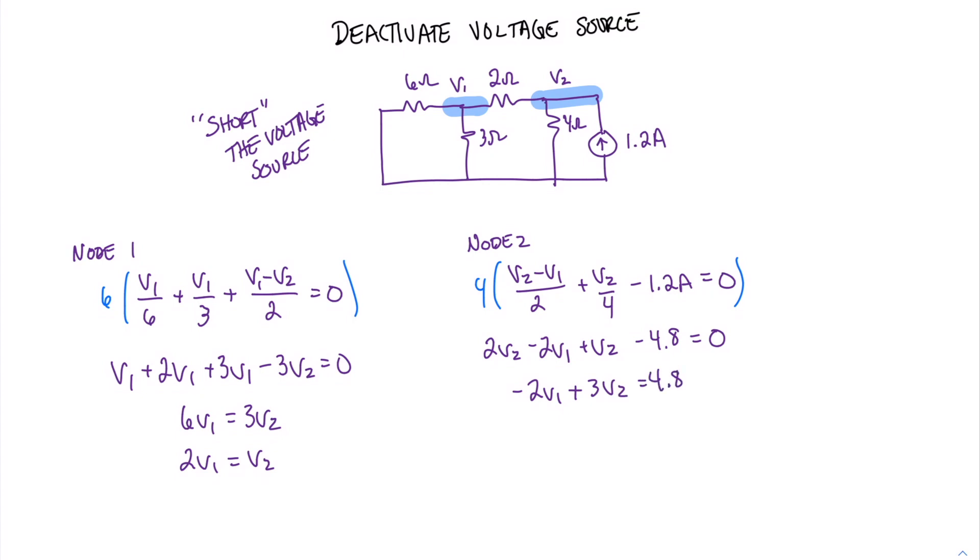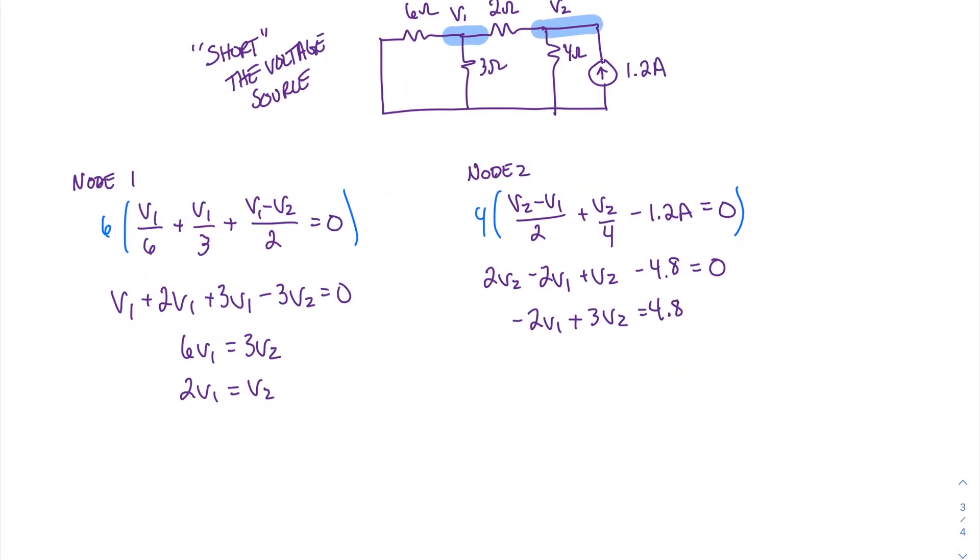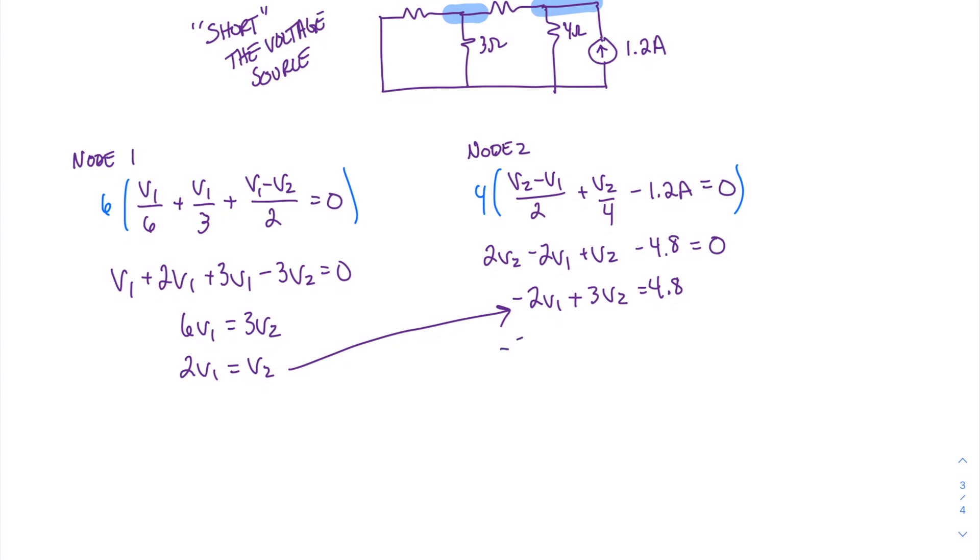Now what we can do is take the expression we derived on the left and plug it into the expression here on the right. Doing so, we get minus 2V1 plus 3 times 2V1 equals 4.8. And so we have a total of 4V1s equals 4.8, which means that V1 equals 1.2 volts. Now plugging that back into the expression on the left, we can solve for V2. And we find that V2 equals 2.4 volts.